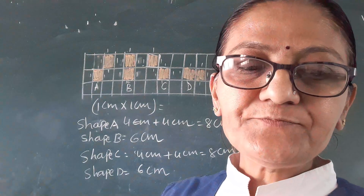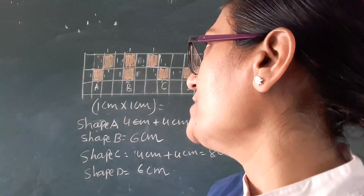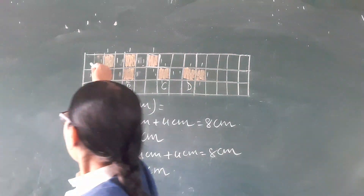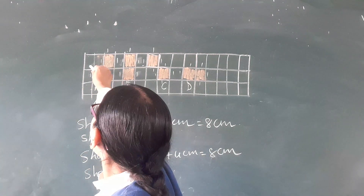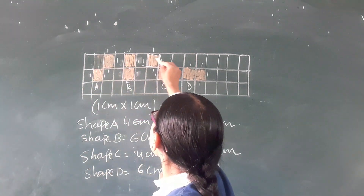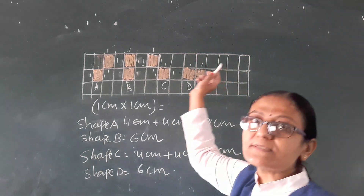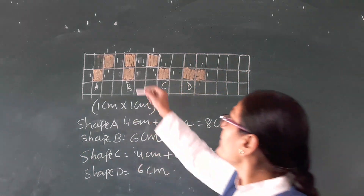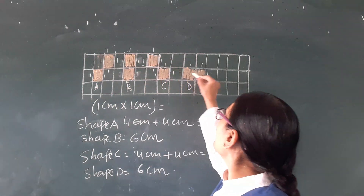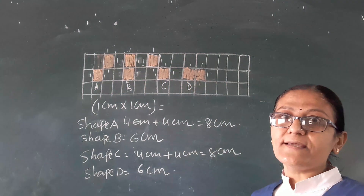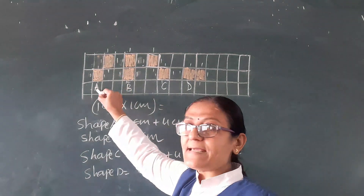How long is the boundary of each shape? So here I draw a grid with 3 horizontal lines and 15 vertical boxes — 1 through 15 boxes are there. Now I join two boxes here, two boxes here, two boxes here, and two boxes here. Now I gave the name of this square shape A.